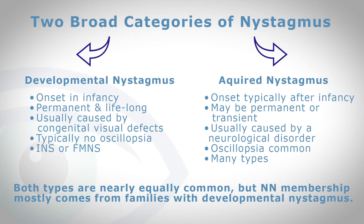Developmental nystagmus has an onset in infancy or at birth. It is usually permanent and lifelong, and is usually caused by congenital visual defects, although sometimes we can never find a cause. Most patients with developmental nystagmus do not complain of oscillopsia, though that's not to say they don't see it — it's just not a common phenomenon. The types of developmental nystagmus are infantile nystagmus and fusion maldevelopment nystagmus.